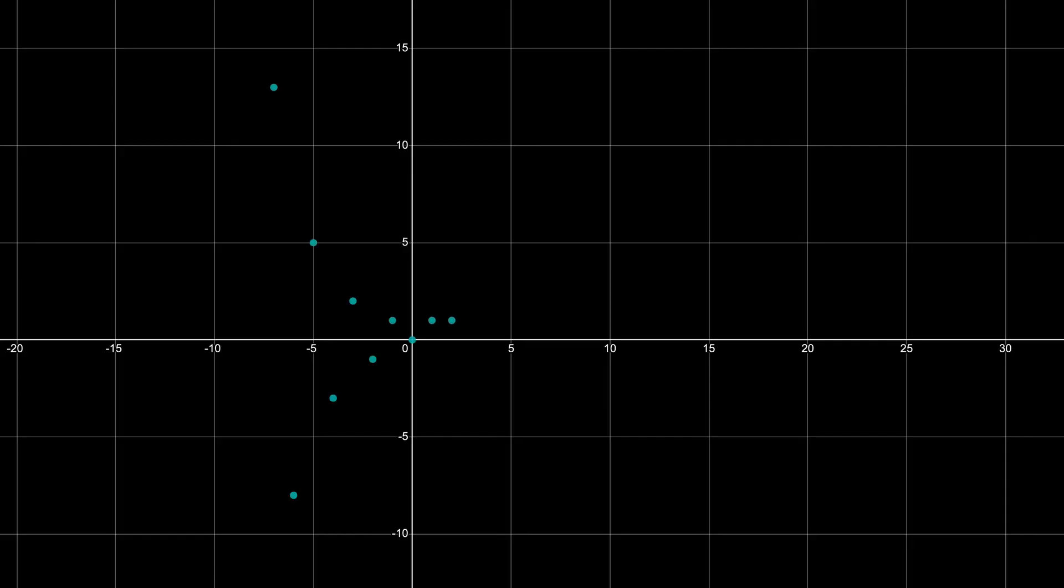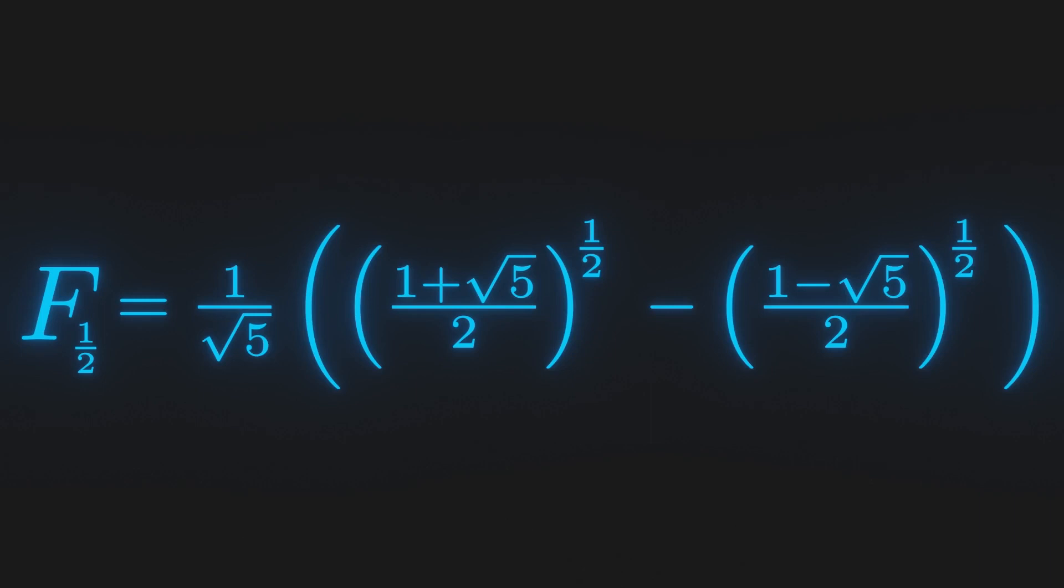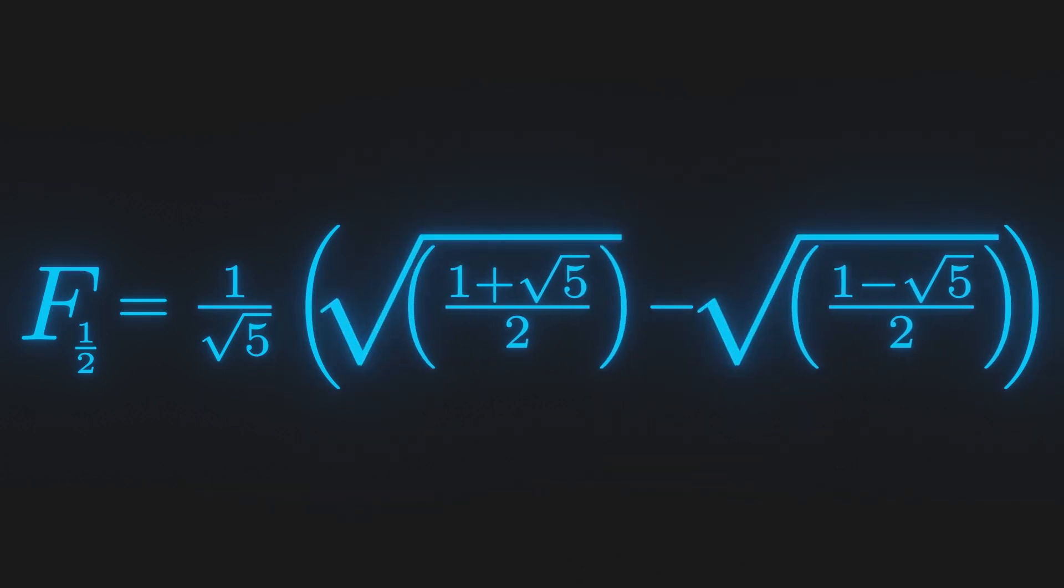It seems our function is still discrete. It looks like our formula is only working for integer values. Let's try plugging in 1 half to see what went wrong. Since raising something to the 1 half power is the same as taking the square root, we see that here we're trying to take the square root of negative number.